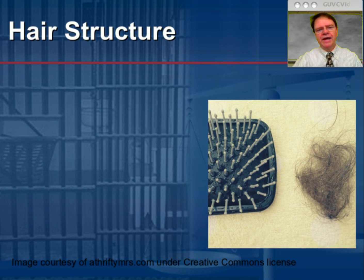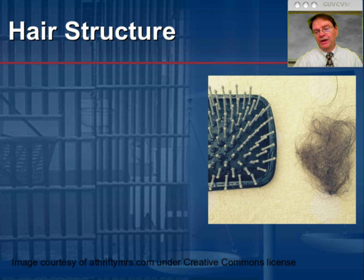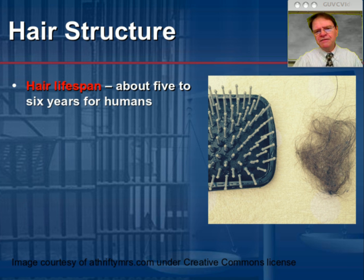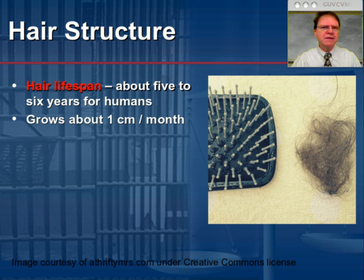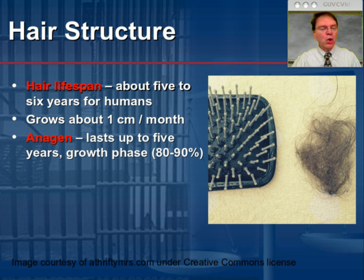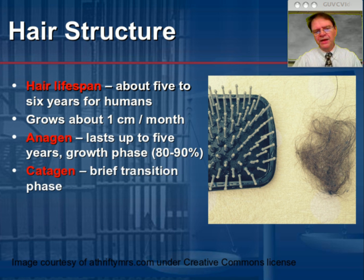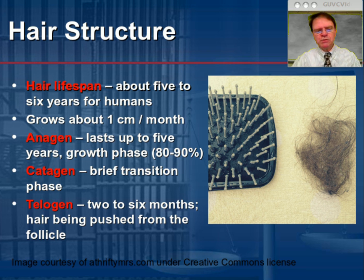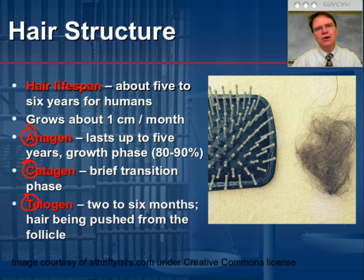As we move on to hair structure, keep in mind that hair grows and falls out. Hair has a lifespan typically between five and six years for humans, and on average it grows about a centimeter a month. The first phase is the growth phase, known as the anagen phase, lasting up to five years — or 80 to 90 percent of the lifespan of that hair follicle. Then a brief catagen phase in which the hair stops growing. And finally the third phase, which can run from two to six months, in which the hair is forced from the follicle. These are in alphabetical order — ACT — which makes them easy to remember.